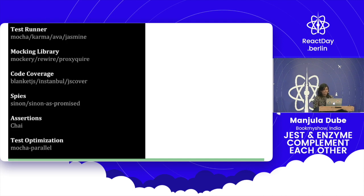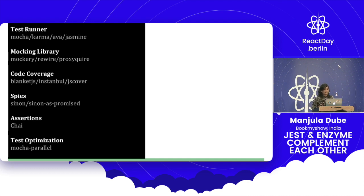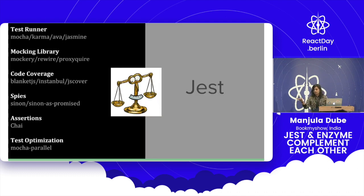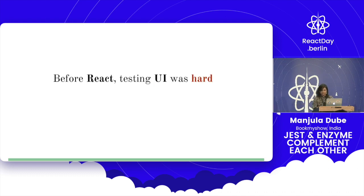That is why we chose Jest. The other reasons were: you see a lot of them on the left — test runners like Mocha, mocking libraries — all of them are separate libraries, while Jest gave us all of them in one.